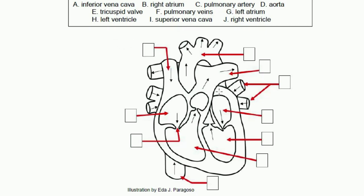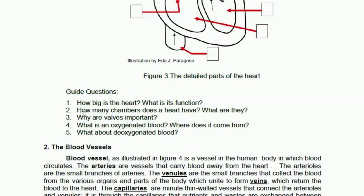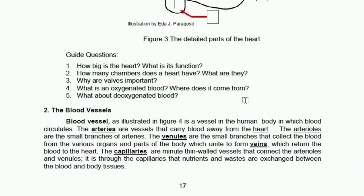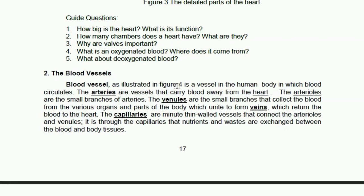Copy the heart diagram. For example, find where the inferior vena cava is and write down the corresponding letter. If you need to find the aorta, write it down. Then answer the guide questions — please limit your answer to one to three sentences only. After that, continue reading on the blood vessels.